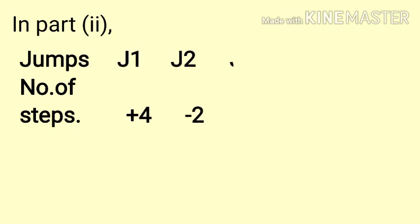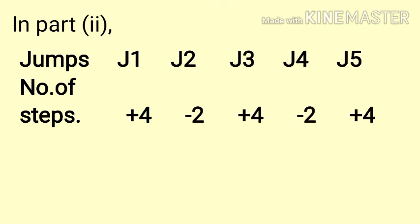Same as in part 2, jumps taken by the monkey to reach the topmost level are 5. Here also, steps moved down are represented by negative integers and steps moved up are represented by positive integers. Plus 4 shows that the monkey has taken 4 steps up, and minus 2 shows that the monkey has taken 2 steps down.